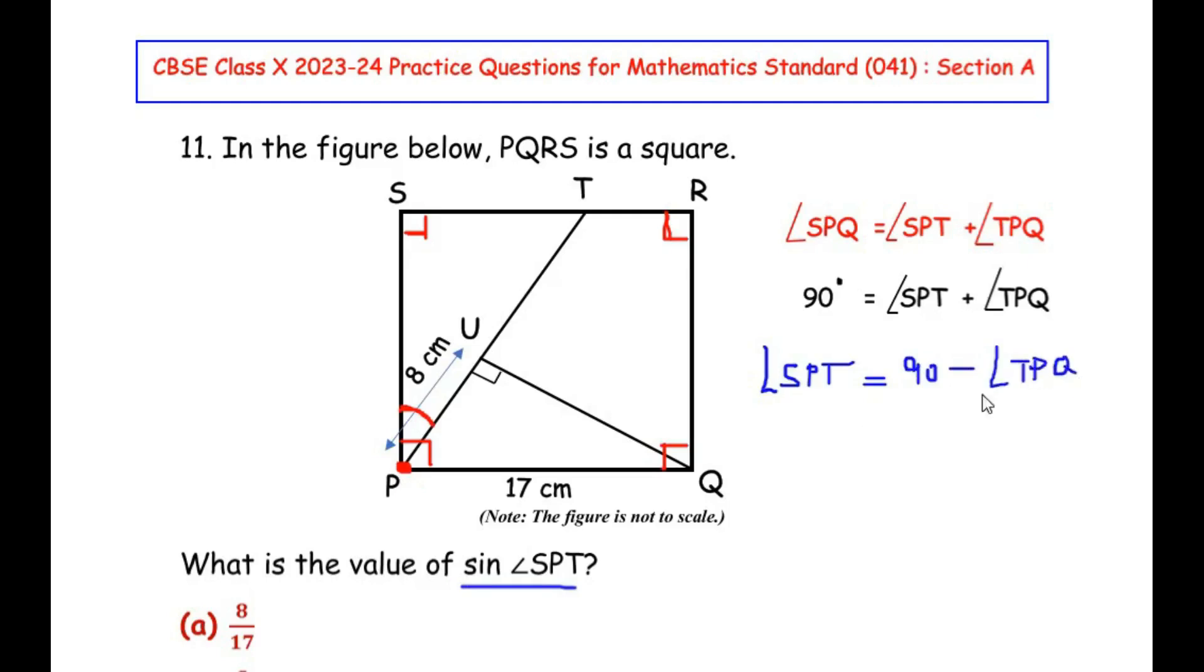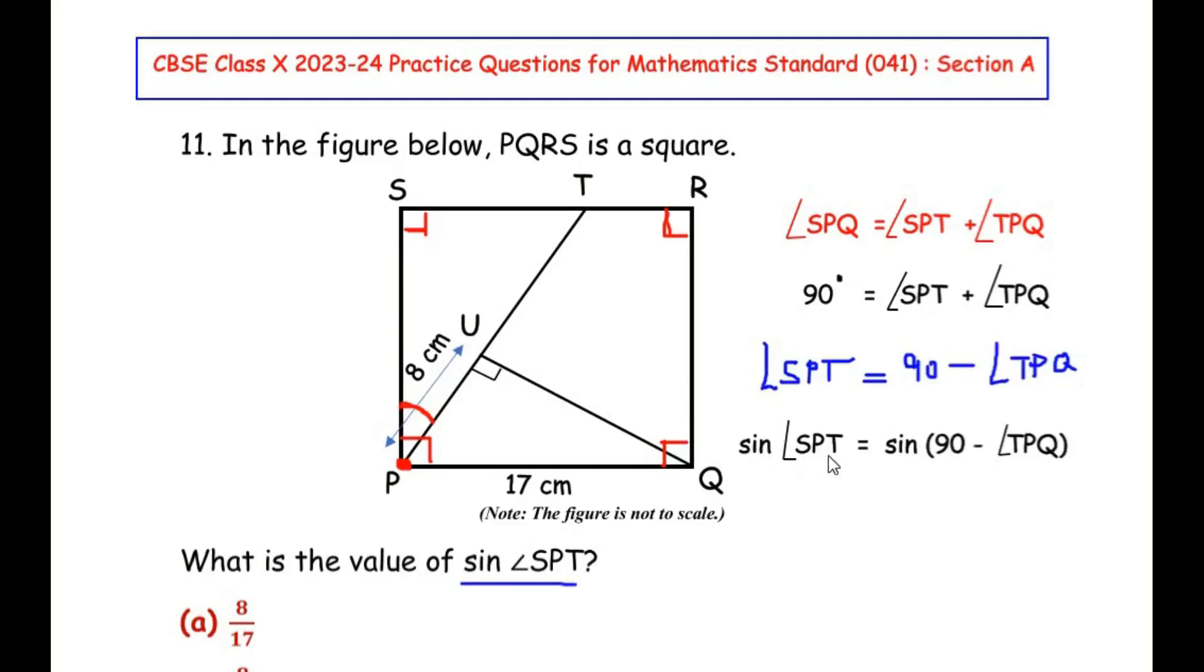Now once we have written this, let us take sine on both sides of the equal to sign. So it becomes sine of angle SPT equals sine of 90 minus angle TPQ. Now we have to make use of the complementary angles in the trigonometric ratios.